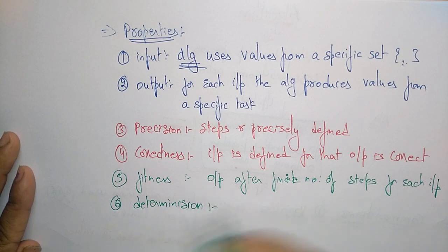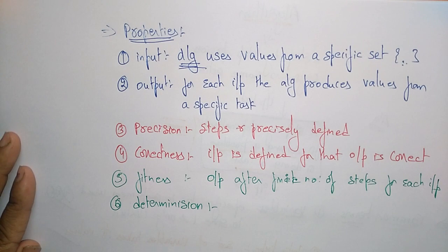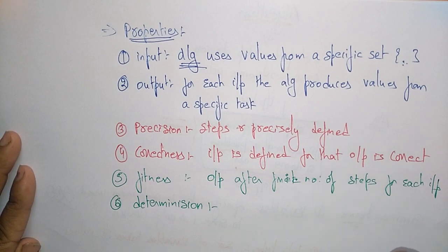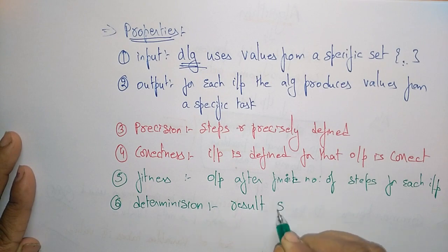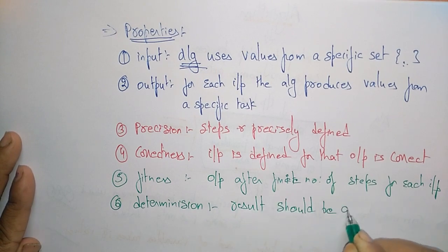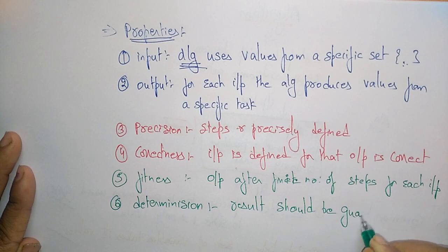The next property is determination. Determination means the result should be guaranteed. Whatever inputs you give, you will get the corresponding output list — the result should be guaranteed.